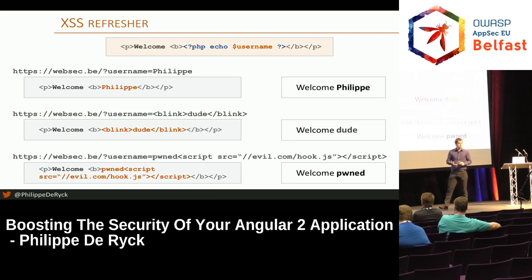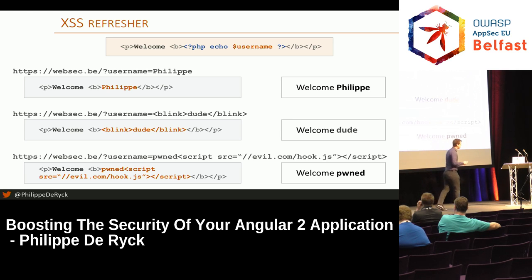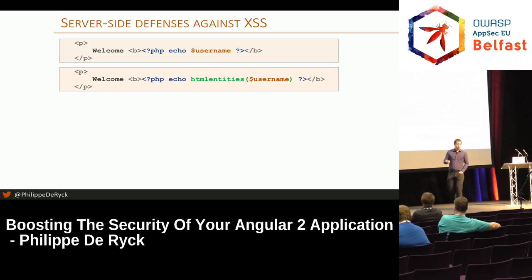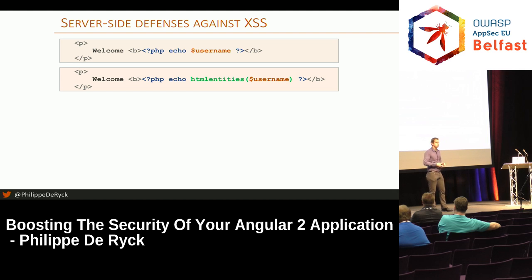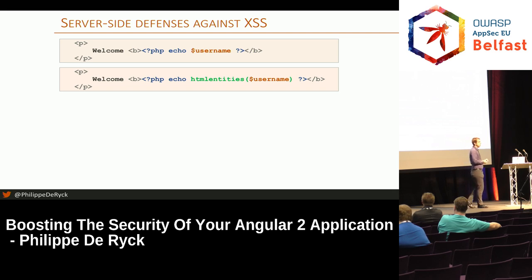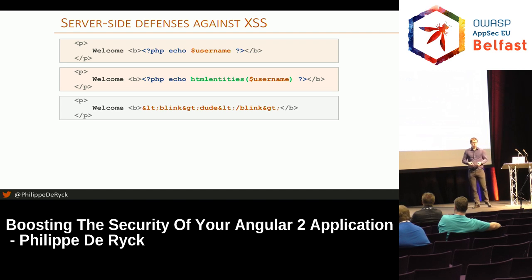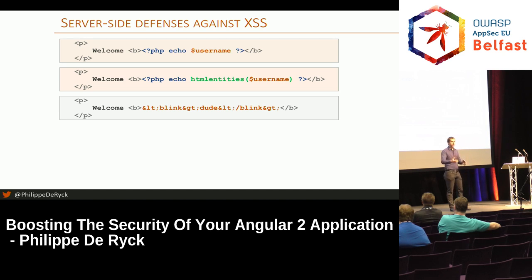This is still a problem in a lot of applications. How do you defend against this? Well, you need to encode the data when you put it into the page. What this does is encode the special characters so that the browser does not get confused about the difference between data and code. Because that's the essence of the problem in traditional cross-site scripting: the server builds a page and then packages the whole thing into HTML and gives it to the browser.